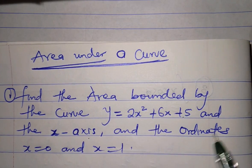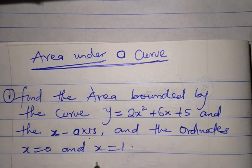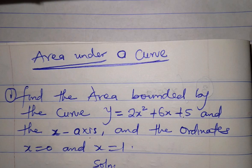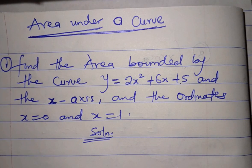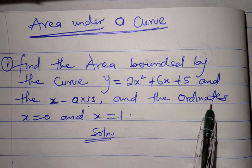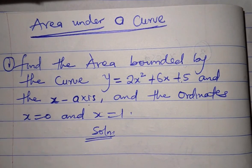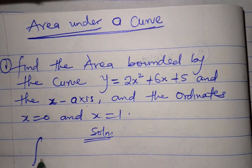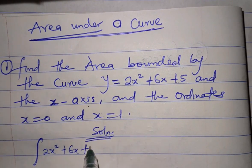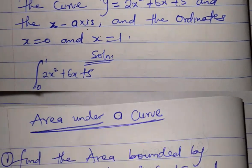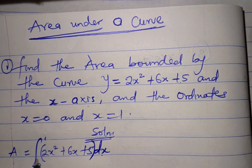and the ordinates x = 0 and x = 1. This is a very easy problem. To determine the area bounded by the curve and the x-axis and the ordinates x = 0 and x = 1, we'll have to integrate the function 2x² + 6x + 5 from 0 to 1. We're integrating with respect to x, so let's integrate this.